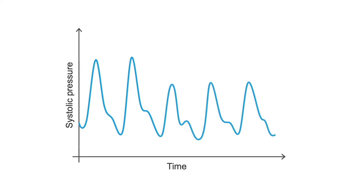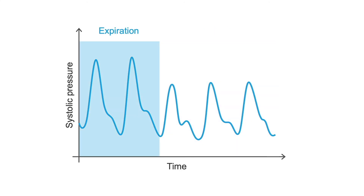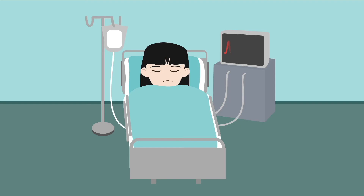If you were to look at this pressure tracing on an arterial line, it would look like this. You can see a lower systolic pressure during inspiration and a higher systolic pressure during expiration. If the patient has an arterial line in the intensive care unit, you might be able to see these fluctuations on the tracing. But I never rely on the arterial line — I always use my ears to make this measurement.